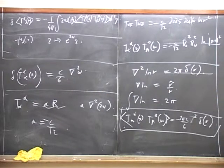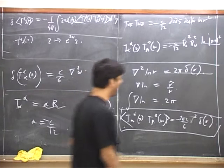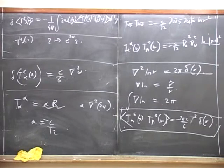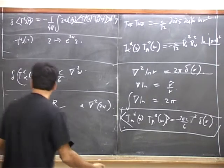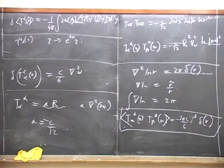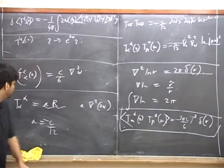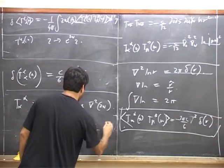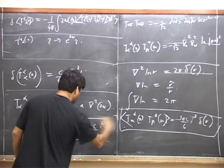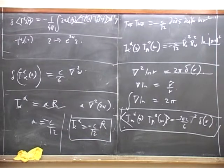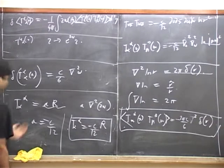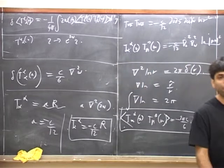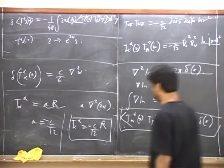Now we have some general considerations that T^alpha_alpha was equal to some number a times the Ricci scalar R. Now we know how T^alpha_alpha changes under a conformal transformation, so all we have to do is see how the right-hand side changes. It's easy to check that this changes by a times del^2 of 2ω. Comparing these two, we see that a has to be equal to C/12 — unfortunately it should be minus C/12, so I've missed a minus sign somewhere. I'll track down the minus sign carefully next time, but up to the minus sign you've got this answer.